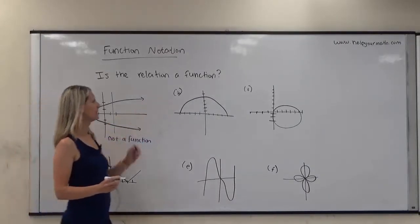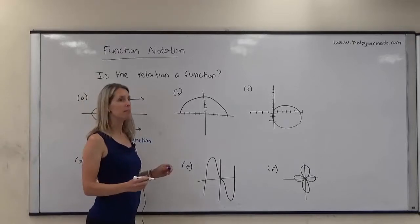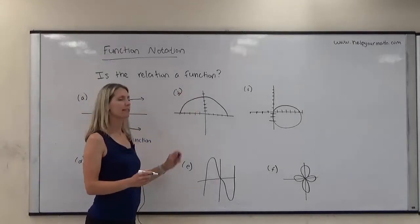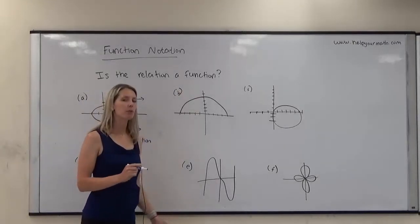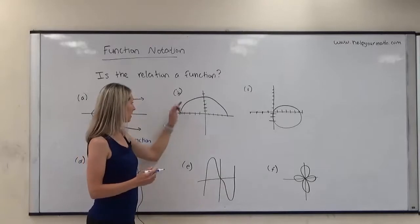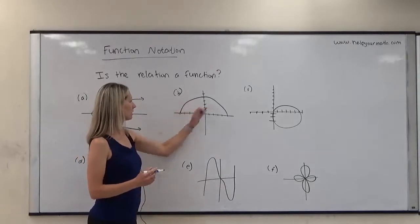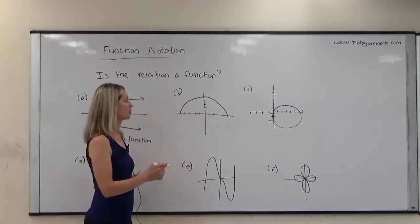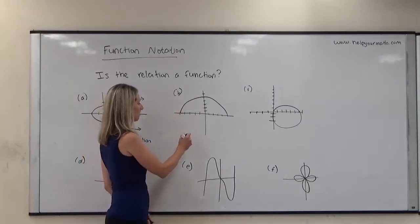What about example B? Is there anywhere that I could draw a vertical line that's going to hit the graph more than once? Nope. Anywhere I draw it's going to hit the graph one time or zero times, in which case this is a function.